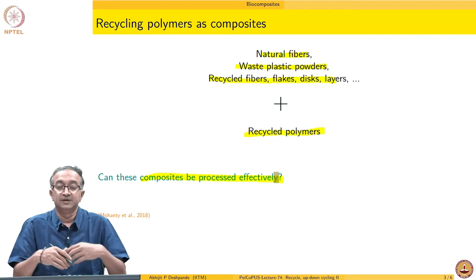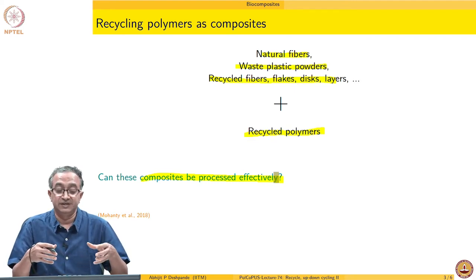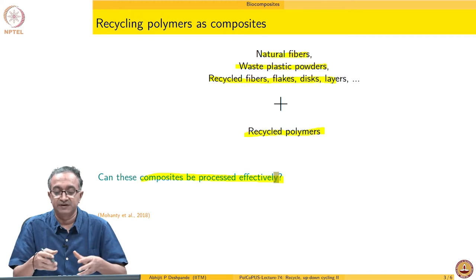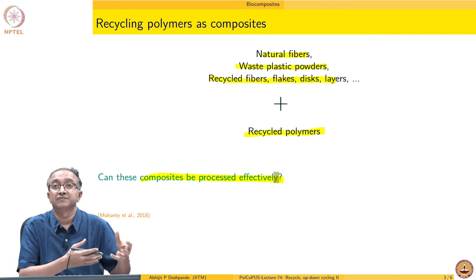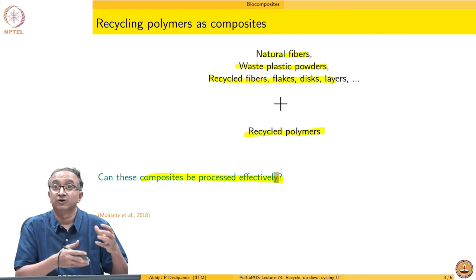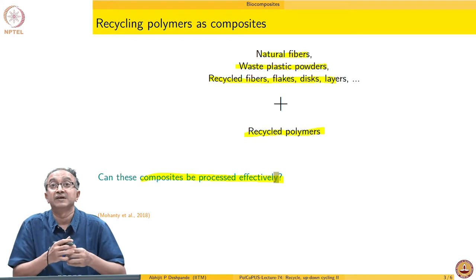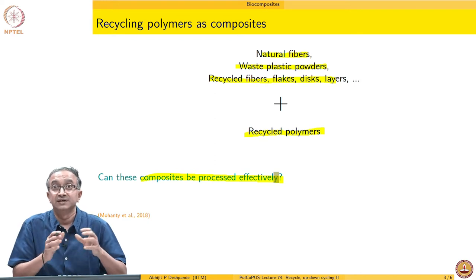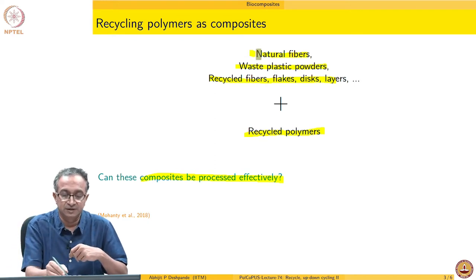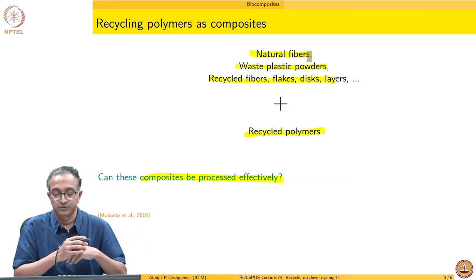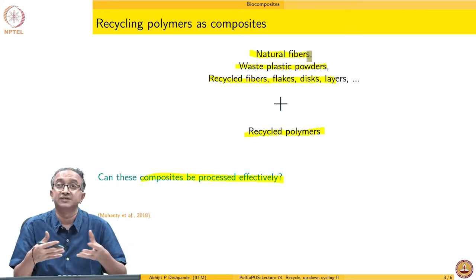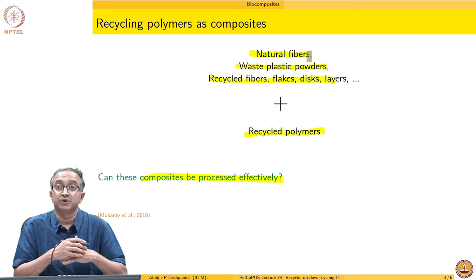Because if we are able to do these, what we are doing is effectively utilizing fibers, flakes, discs, layers, powders, different forms of waste plastic. So, we are not constraining itself in terms of a pellet of pure polymer which is available as a recycled plastic. Secondly, we are also using natural fibers which are based on renewable sources and incorporating it in this composite product.